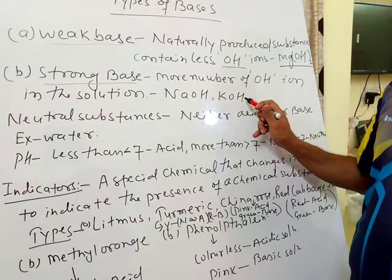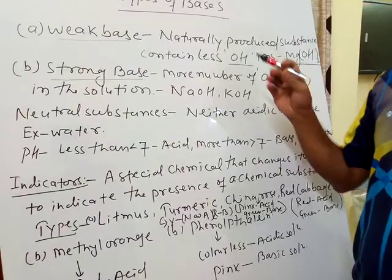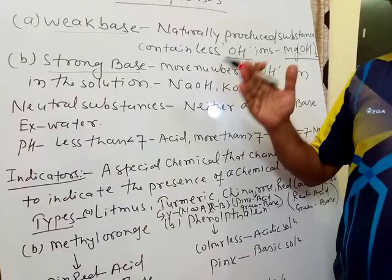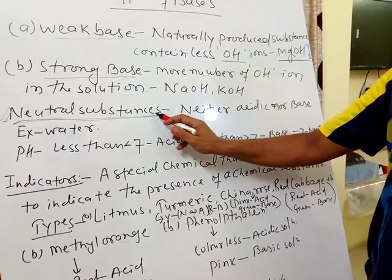Now we have discussed acid and base. Some substances are acidic in nature and some substances are basic in nature. But there are also some substances which are neither acid nor base. They are called neutral substances — substances which are neither acidic nor basic in nature. For example, water.